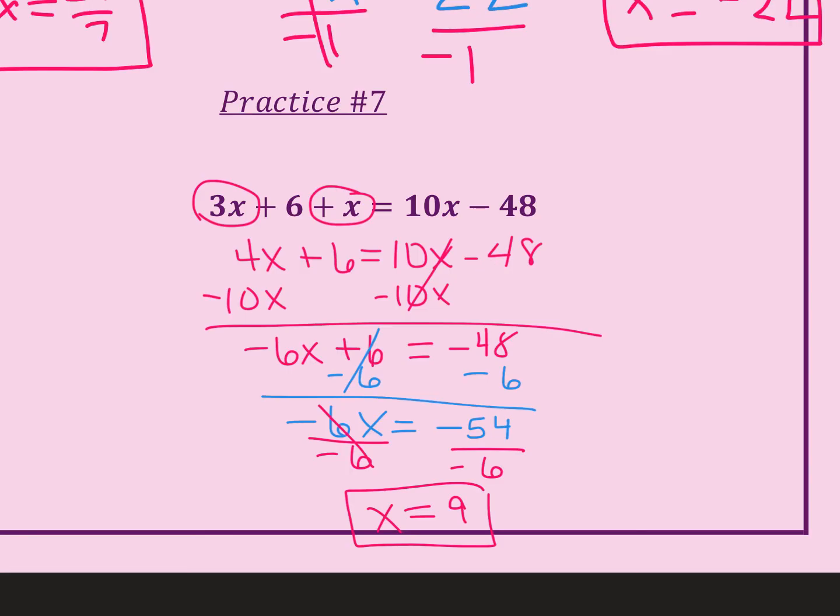Now that I combine like terms, now I can subtract 10x to eliminate it here. But whatever I do to one side, I must do to the other. Then I moved this 6 over. And then at the very end, I had two negatives, which gave me a positive. And -54 divided by -6 is 9.